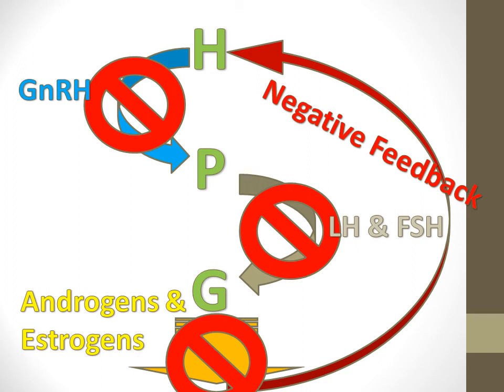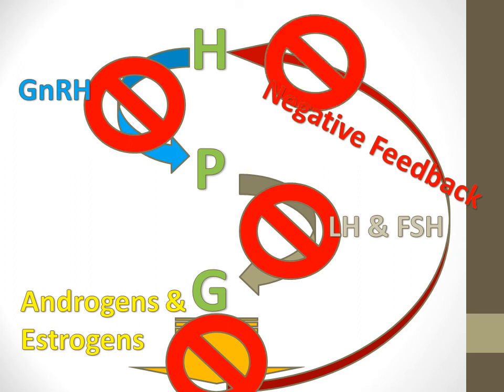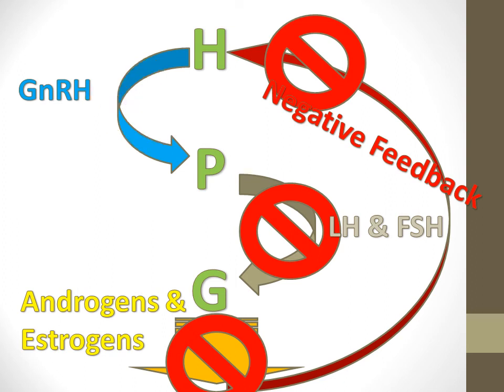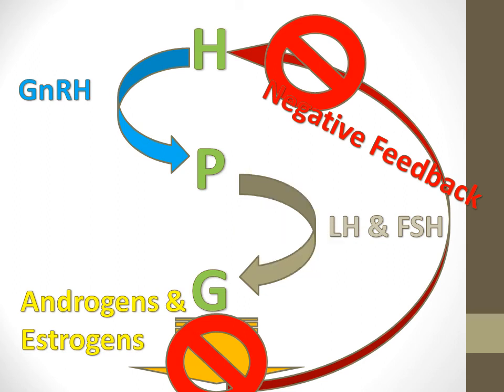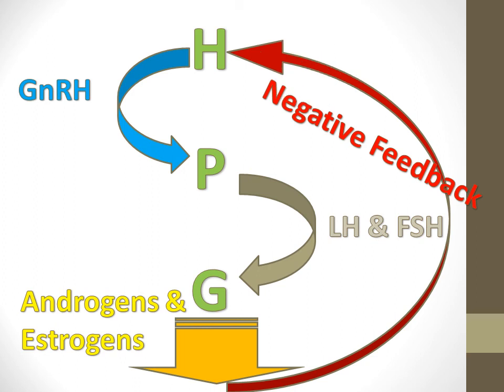Keep in mind: once that stops, the negative feedback loop is also going to stop. So if you don't have a negative feedback loop, the hypothalamus is going to continue to produce GnRH, the pituitary is going to get a signal to produce LH and FSH, and that's going to signal the gonads to produce androgens and estrogens — and then you're going to have your negative feedback loop again. As you can see, we've made full circle.